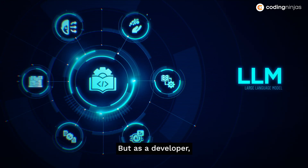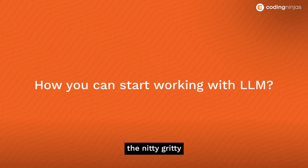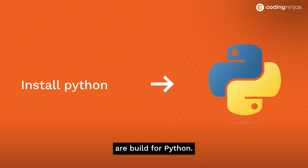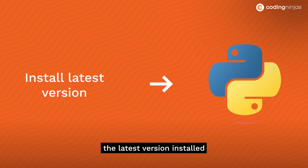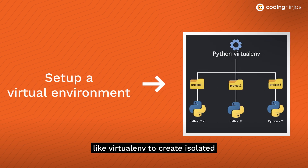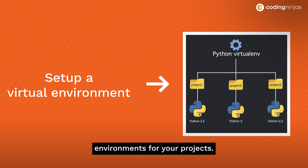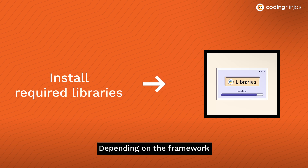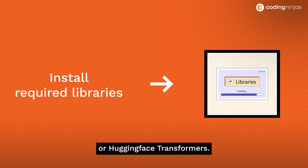As a developer, how can you build your own LLM? Let's get into the nitty-gritty of how you can start working with LLMs. First, you need to install Python — most LLM frameworks and libraries are built for Python, so make sure you have the latest version installed. Then set up a virtual environment using tools like virtualenv to create isolated environments for your projects, which helps manage dependencies and avoid conflicts. Finally, install the required libraries; depending on the framework you choose — TensorFlow, PyTorch, or Hugging Face Transformers — install the necessary library using pip.